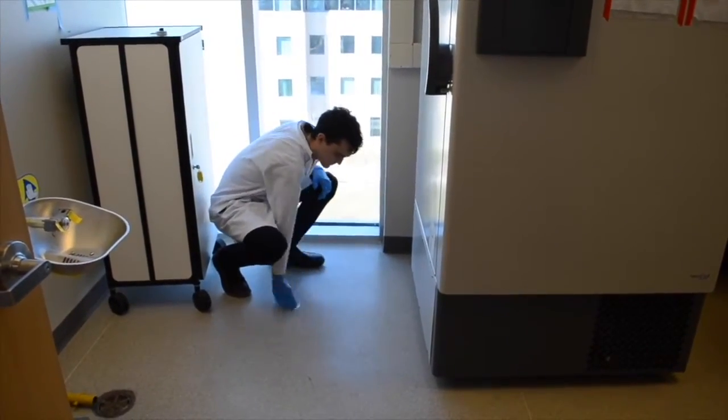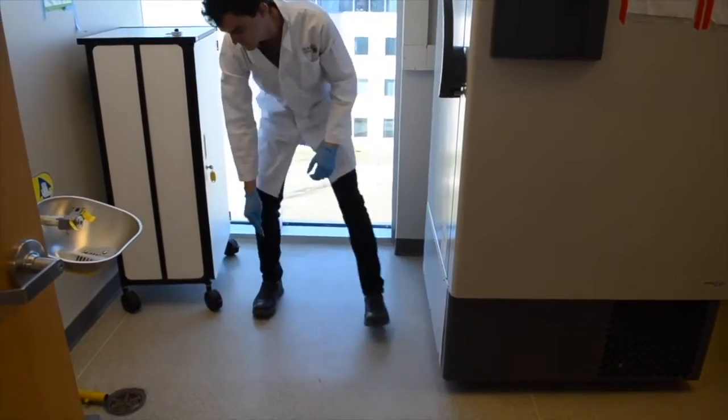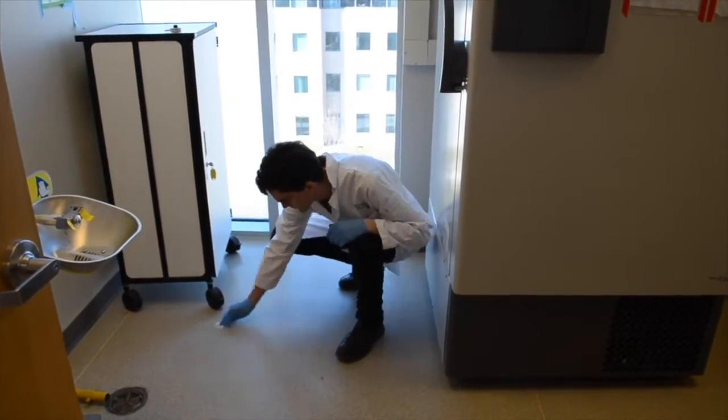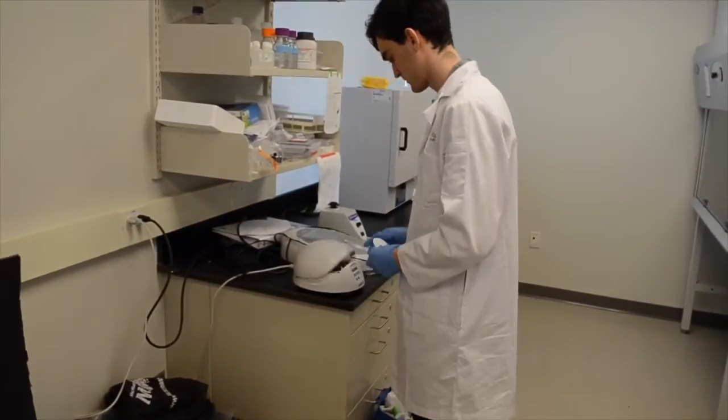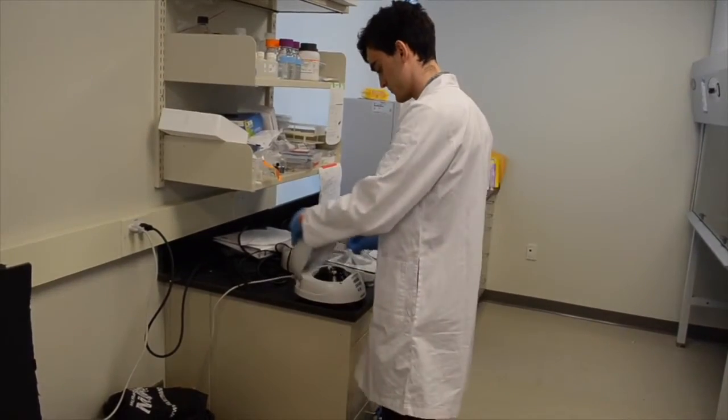The current method to look for this contamination is spike testing. Nuclear workers swab a few areas of the floor with test paper. They will then measure the radioactivity of this paper at a central counting station. This approach is not ideal.